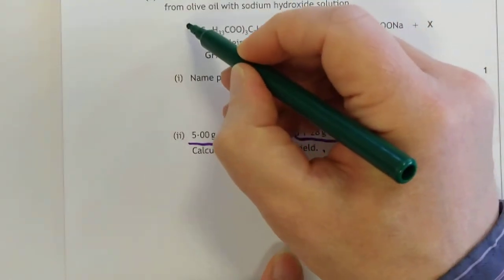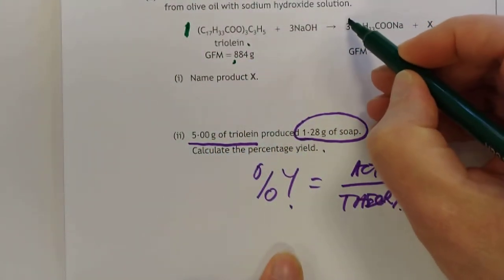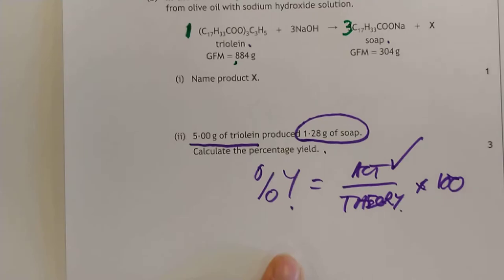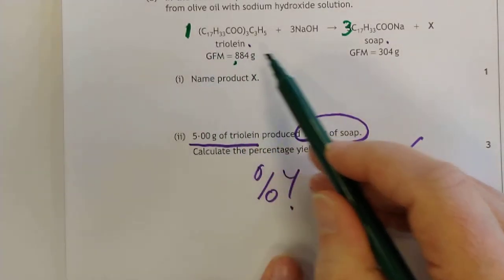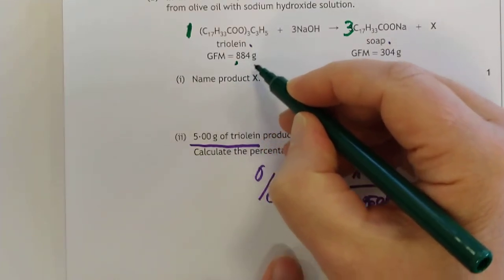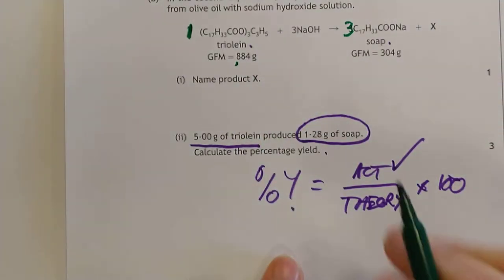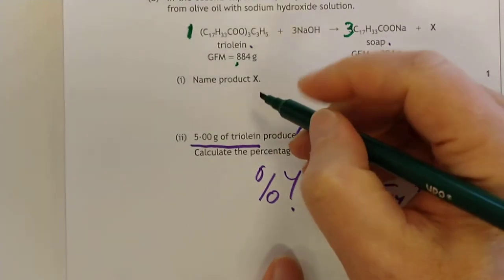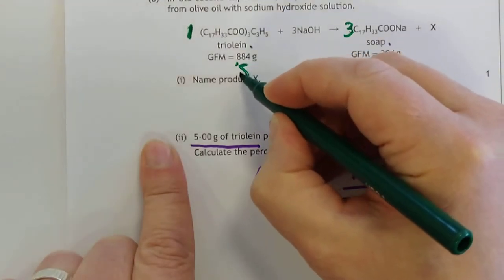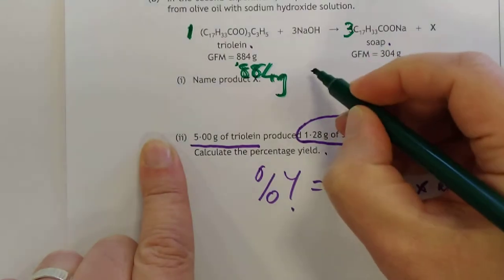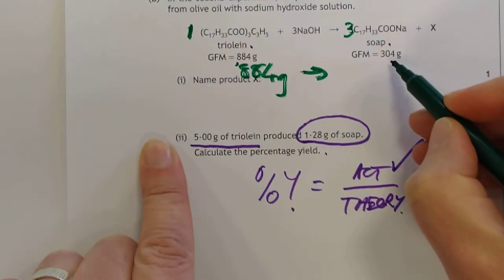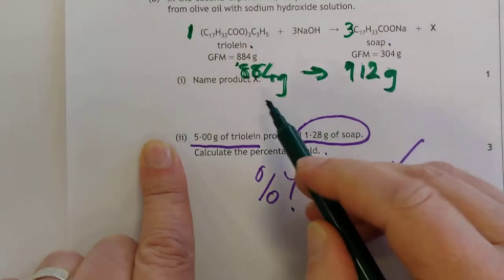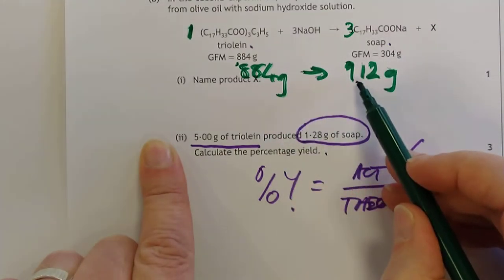Now 884, the mole ratio first by the way. It's 1 to 3, nearly caught me out there. That's why we RTFQ - read the flipping question. So 1 mole of this makes 3 moles of this. So 884 grams should make 3 moles, which will be 912 grams. I'm going to do the proportion calculation first, and then I'll show you how to do it in moles if you prefer.